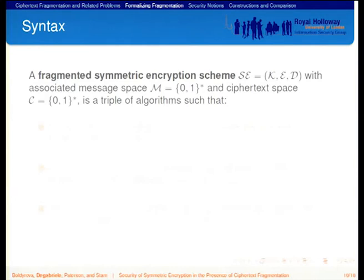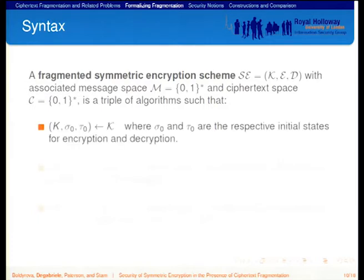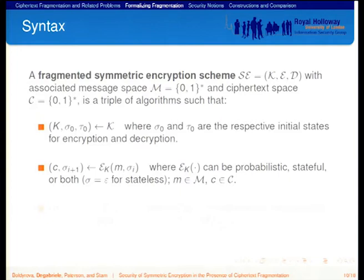In order to cater for fragmentation, we have to redefine the syntax of an encryption scheme. We define a fragmented symmetric encryption scheme as a triple of algorithms. As usual, we have the key generation algorithm, which outputs a key, an initial encryption state sigma_0, and an initial decryption state tau_0. Encryption works as usual with a slight difference: it takes a message and an encryption state, and outputs a ciphertext and an updated state. The encryption algorithm can be probabilistic, stateful, or both. For a stateless scheme, we let the state be the empty string.